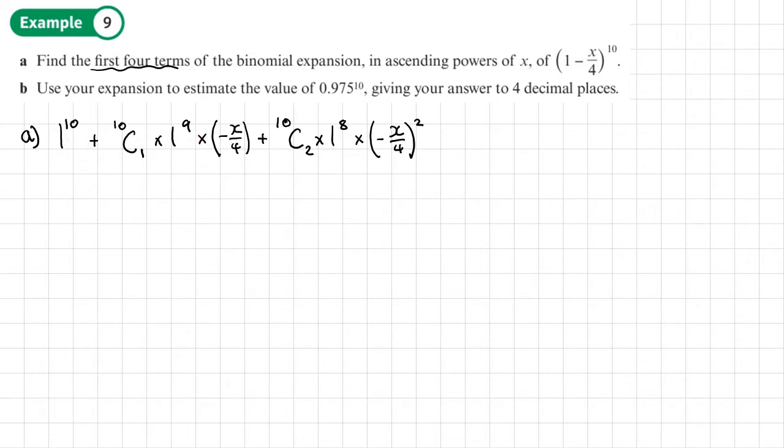So plus 10C3 times 1^7 times (-X/4)^3 and plus dot dot dot.